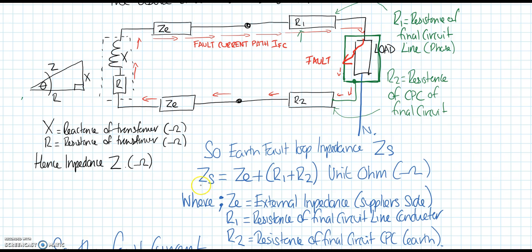Zs is the total earth fault loop impedance. Ze is from our electricity board, which we can get by measurement. R1 R2 is our final circuit line and earth reading. So the earth fault loop impedance is Ze plus R1 plus R2.